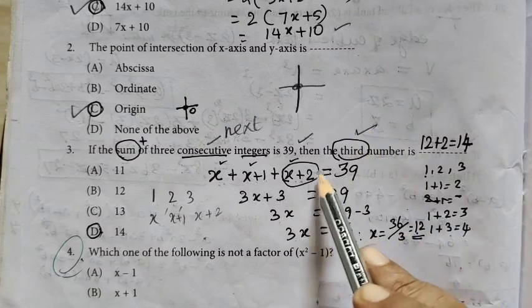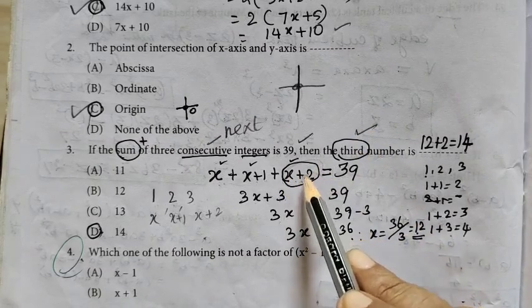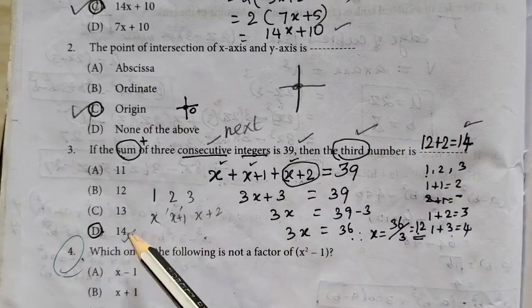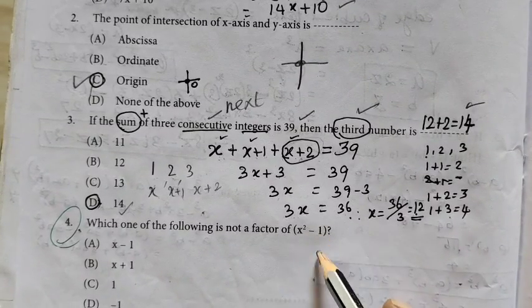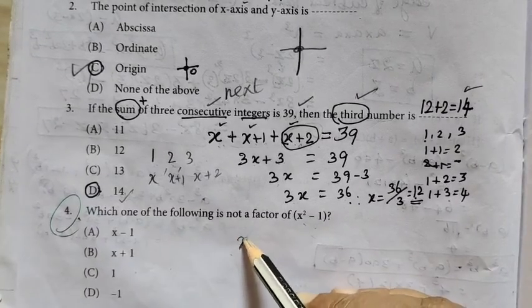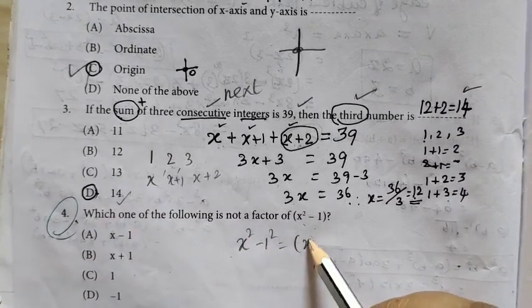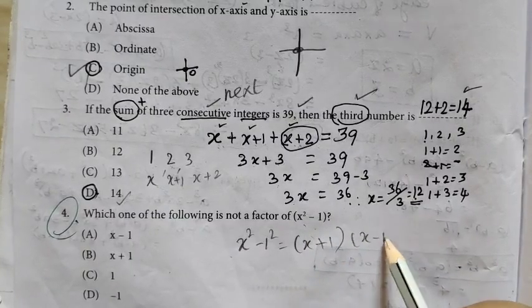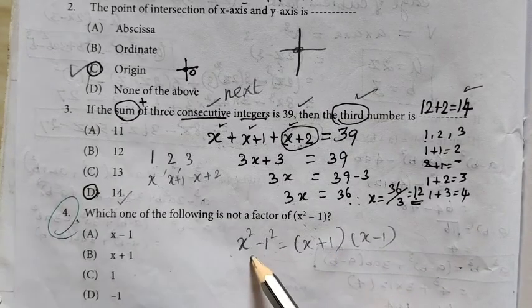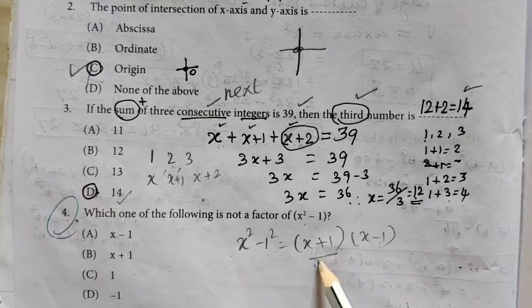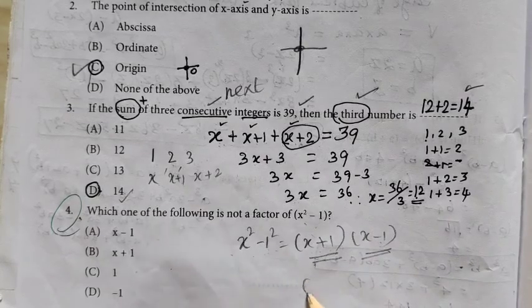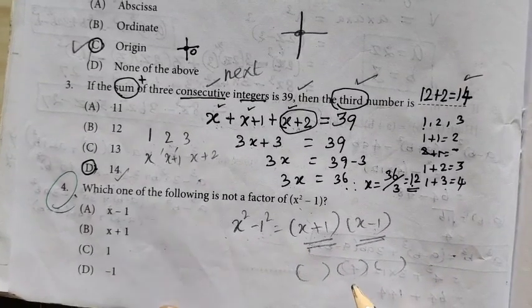Question 4: Which one of the following is not a factor of x squared minus 1? Using a squared minus b squared equals (a + b)(a - b) formula: x squared minus 1 equals (x + 1)(x - 1). So x plus 1 is a factor and x minus 1 is a factor.